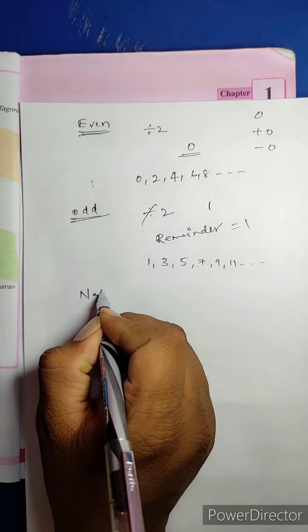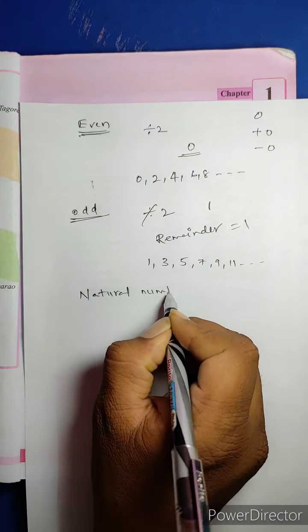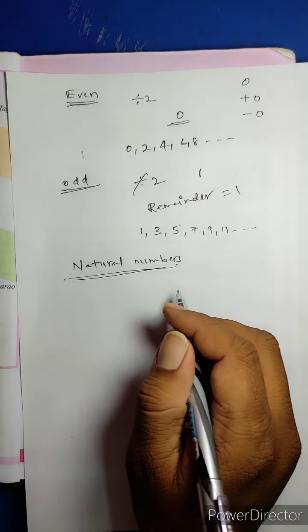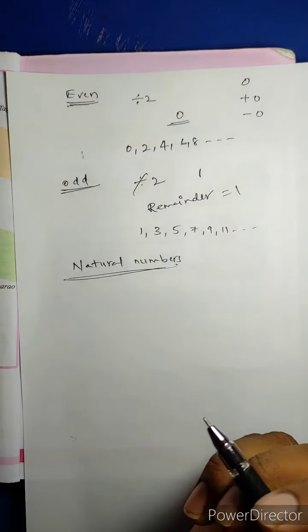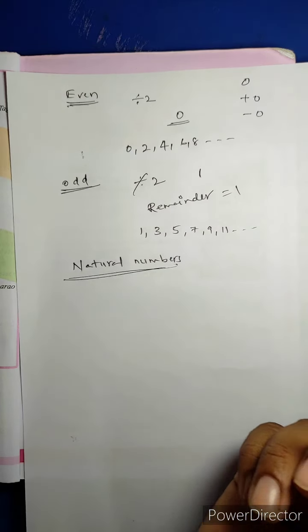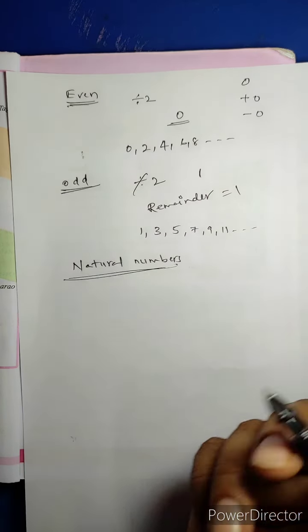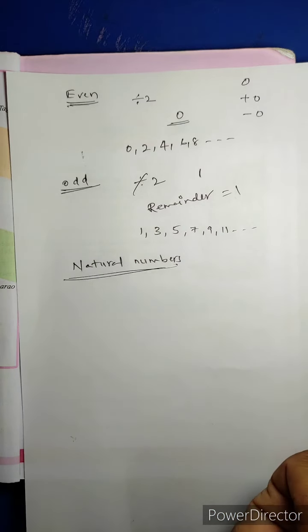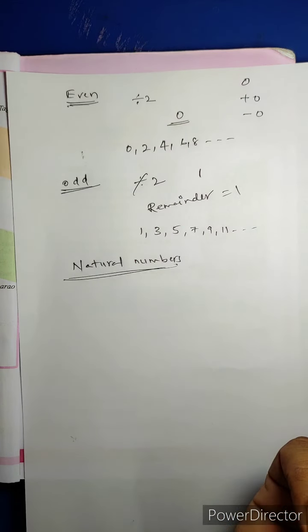Next our topic: Natural Numbers. What is meant by Natural Numbers? Counting Numbers are called Natural Numbers. Generally, if anybody asks you how many students are in your classroom, you might say 30 students or 28 students. When you count the students in that particular class, you count 1, 2, 3, 4, 5...